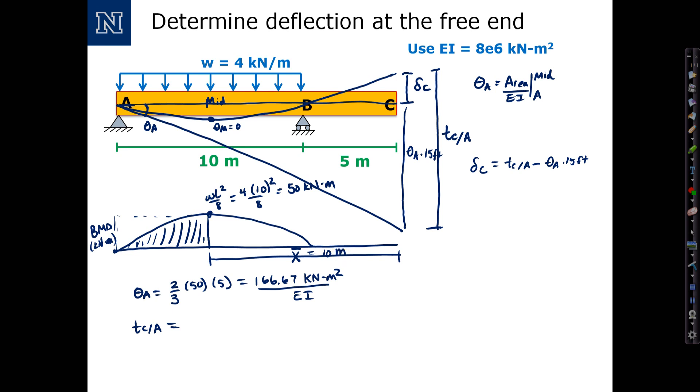So this distance right here is x bar, and that's equal to 10 meters. So T from C to A is the whole area, which is twice the area we computed here, 2 times 166.67, that's going to be the area.